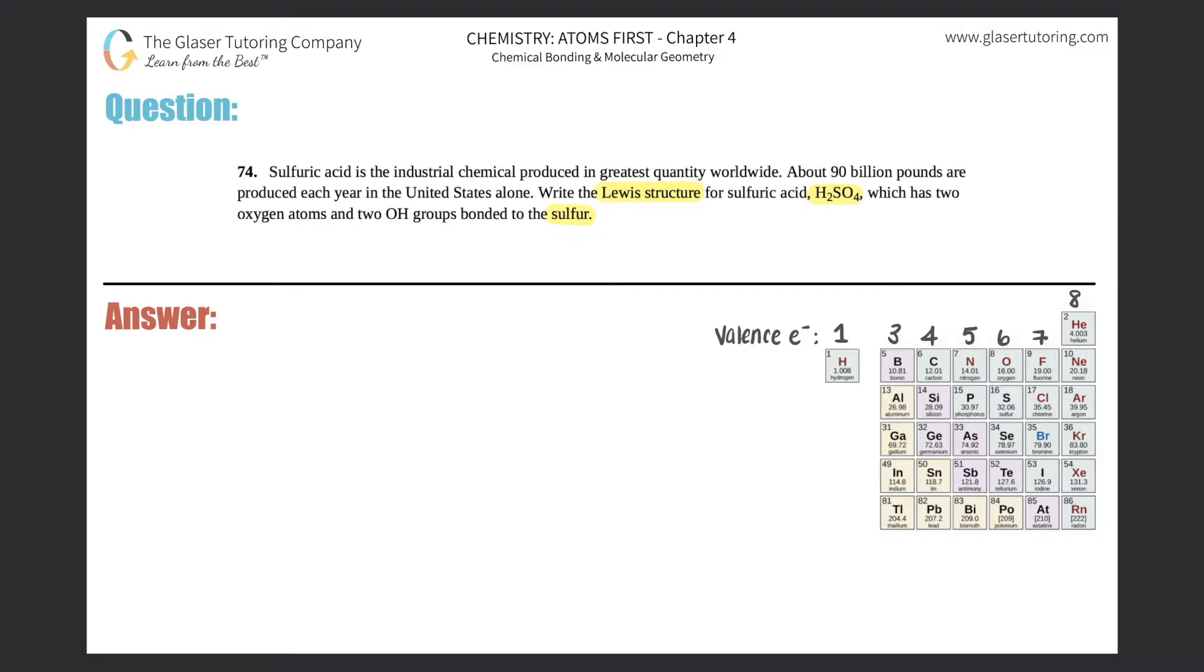All right, so they give you a little heads up as to how to start drawing H2SO4. They're telling you that you have two regular oxygen atoms, so just O, and then you have two OH groups bound to the sulfur. So that technically means that sulfur should be the central atom. So we have sulfur in the middle, then I have my two oxygens. I'm going to put them right here. Actually, I'll make these the OHs. So I have OH on one side and OH on the other side.